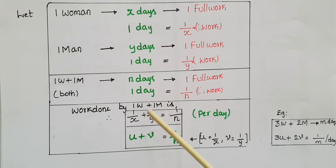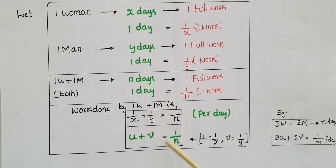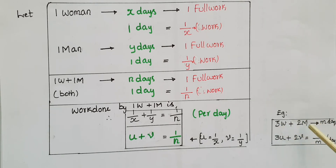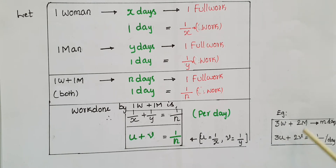Since x and y are in the denominator, it is difficult to find their values directly. So we assume one-by-x as u and one-by-y as v. Then the equation becomes u plus v equals one-by-n. For example, if three women and two men can do the work in m days, you can write 3u plus 2v equals one-by-m, which is the work done in one day.